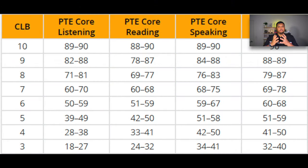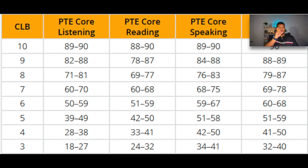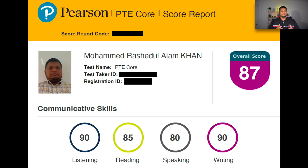If you want to migrate to Canada, you need to convert your PTE Core score to the CLB conversion chart. I am not a migration consultant for Canada, so I wouldn't be able to give you any details, but this is the chart that you will use to convert your PTE Core score to the CLB scoring that will be added to your Canadian migration application. My overall score is 87 and my listening and writing were 90 in each band, whereas my reading and speaking were 85 and 80.